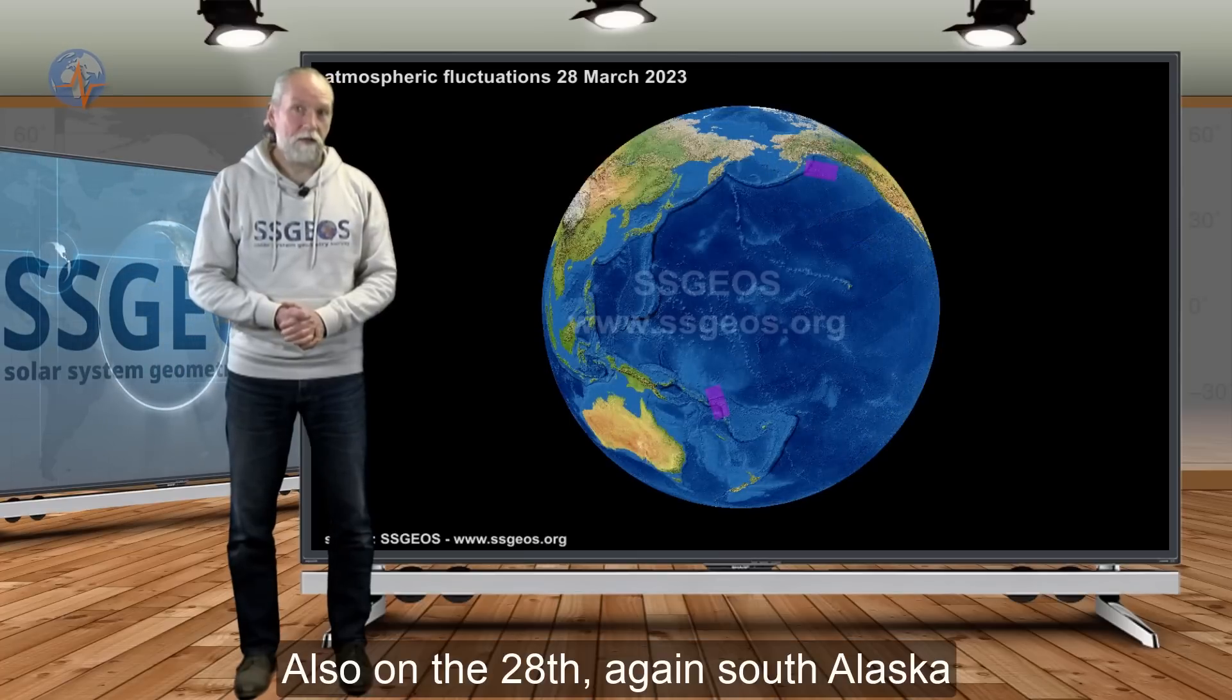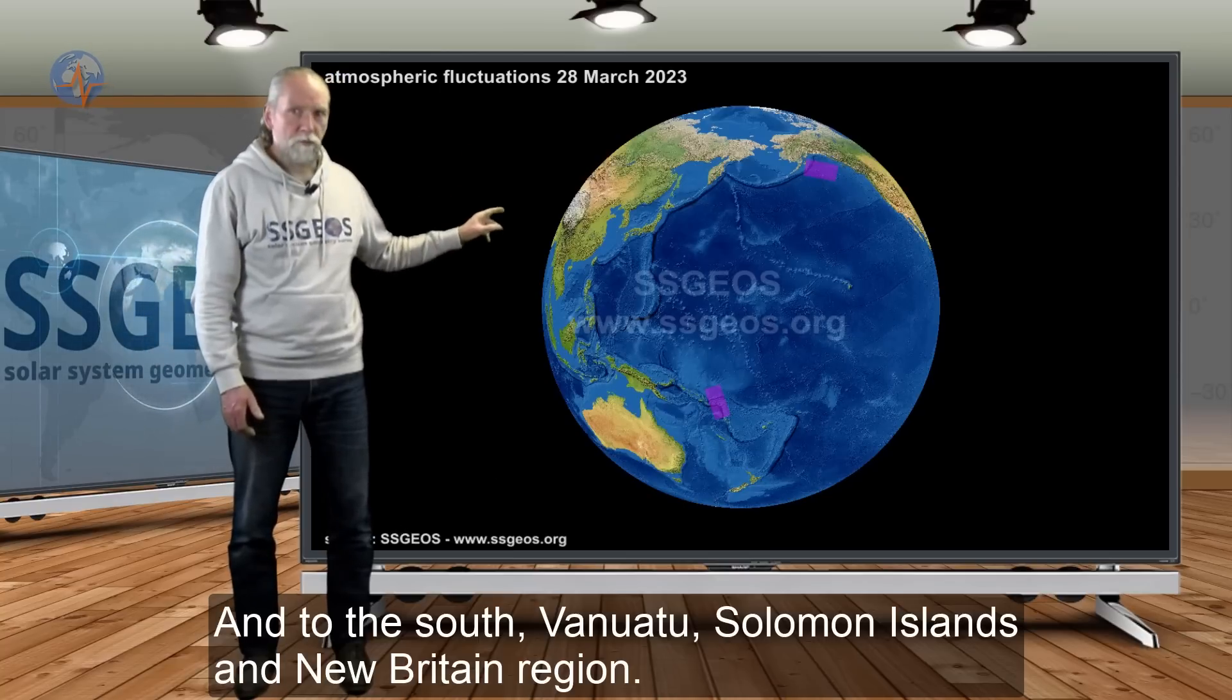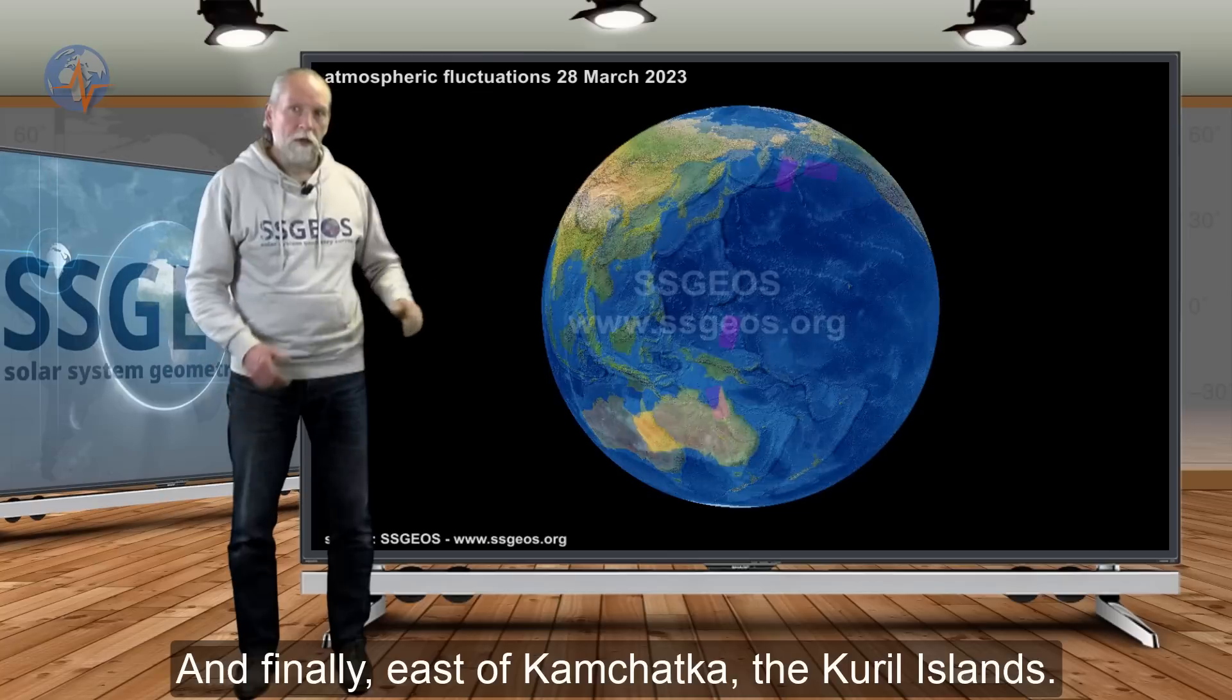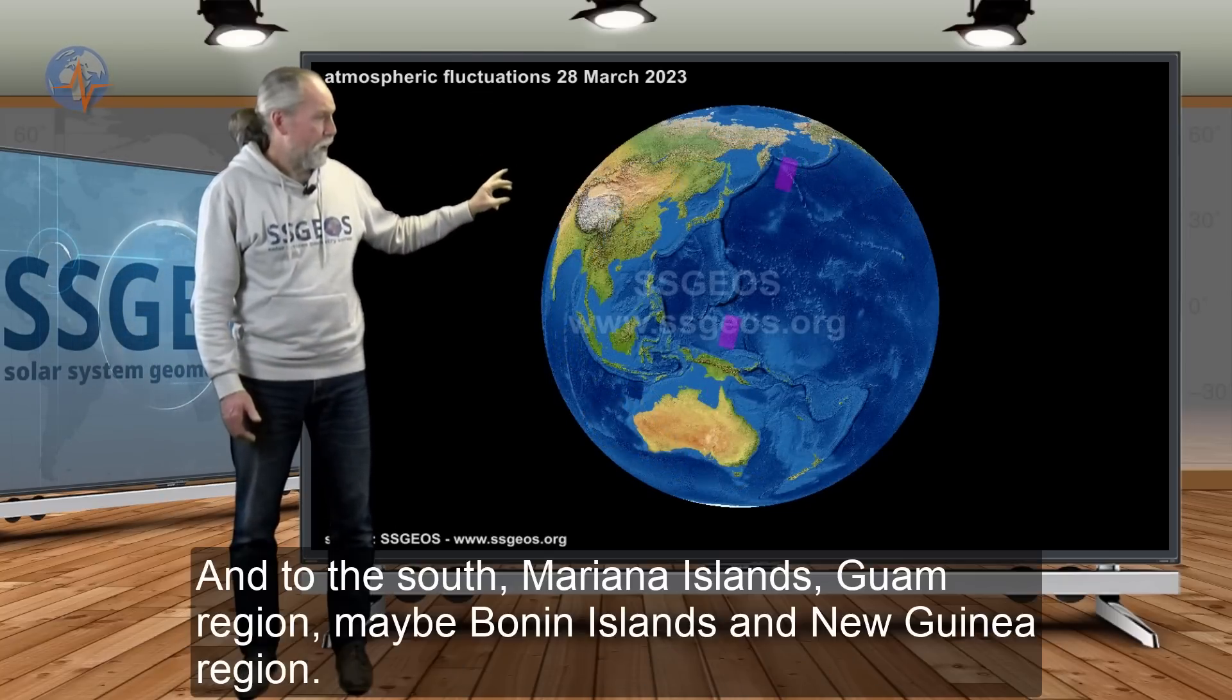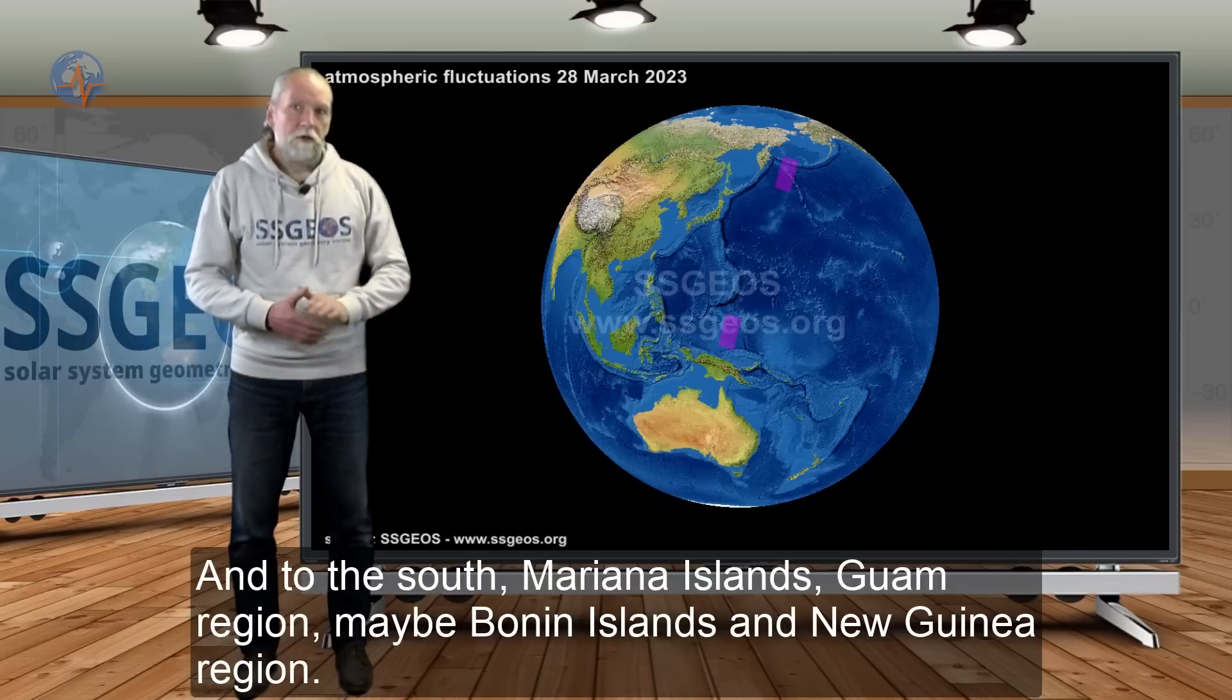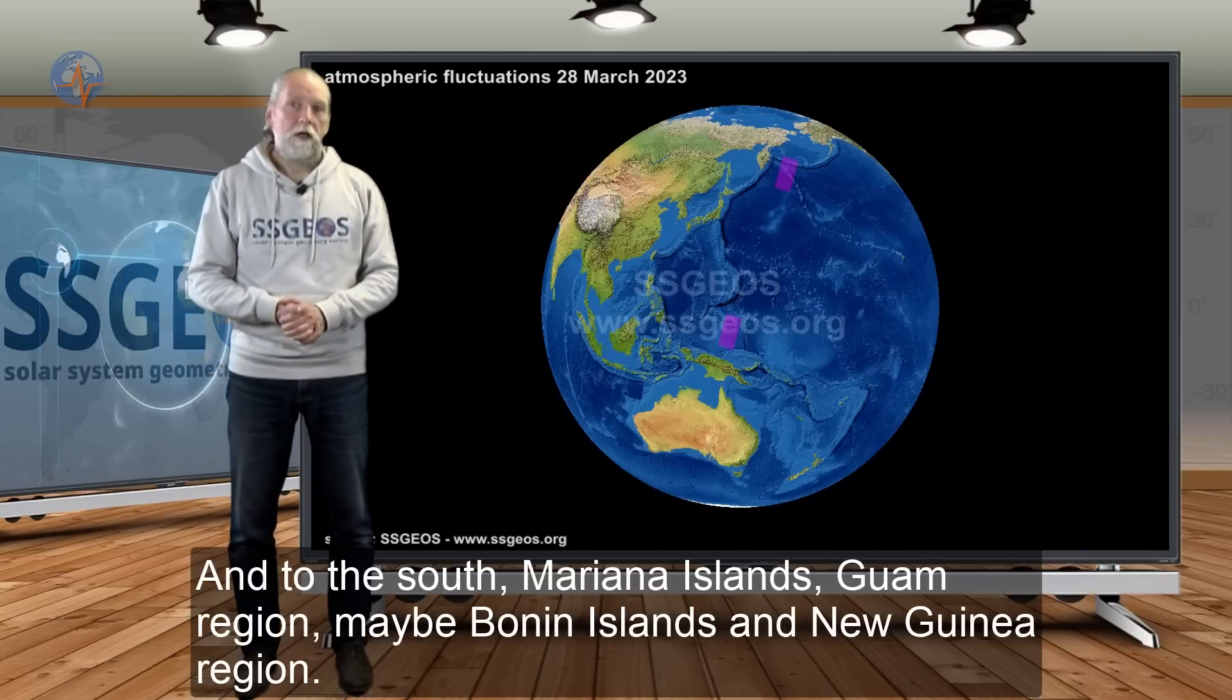Also on the 28th, again south Alaska, and to the south the Solomon Islands, New Britain region. And then finally east of Kamchatka, Kuril Islands, and also to the south the Mariana Islands, Guam region, maybe Bonin Islands and New Guinea region.